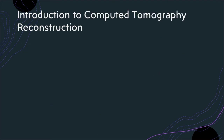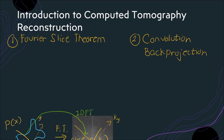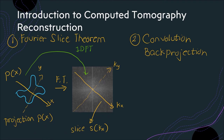In discussing CT reconstruction, we have these two main concepts. First, we have the Fourier slice theorem, which is said to be the heart of CT reconstruction. This is the basis of the second concept, the filtered back projection, also known as the convolution back projection. Let's discuss first the Fourier slice theorem, or direct reconstruction using this theorem.